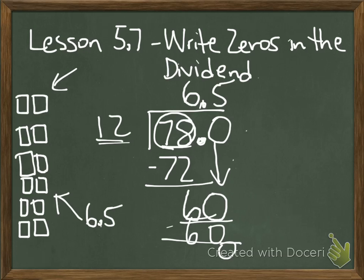So whenever you're dividing, and you want your remainder to become a decimal, it's a whole number, we add our decimal, we add our 0, and we can bring down and continue to divide.